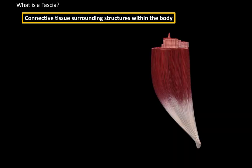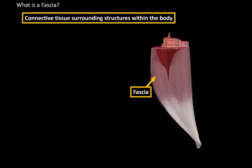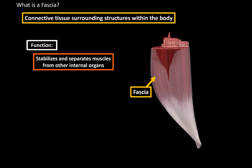A fascia is just a connective tissue surrounding structures within the body. Here is a muscle, just a raw muscle within the body, and here is a fascia — it surrounds the muscles. One thing is that the fascia stabilizes and separates muscles from other internal organs.